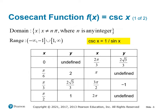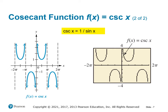Similarly, cosecant equals 1 over the sine function. So wherever sine is 0, the cosecant will be undefined — which occurs at 0, at π (180 degrees), and 2π. Where sine equals 1, cosecant will equal 1, which is at 90 degrees. And where sine equals negative 1 at 270 degrees or 3π/2, cosecant will also equal negative 1. We have some interim values as well, and we have the same shape — asymptotes where sine equals 0, and parabolas in the positive and negative directions.